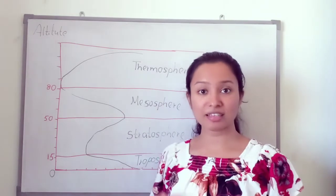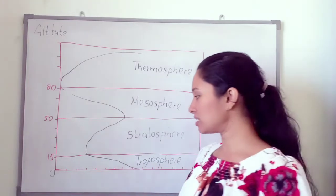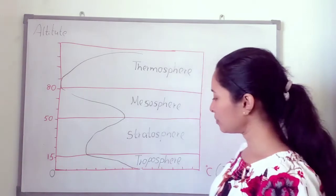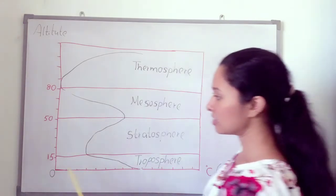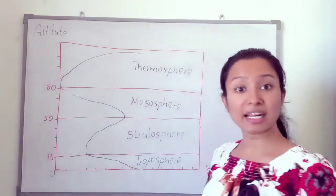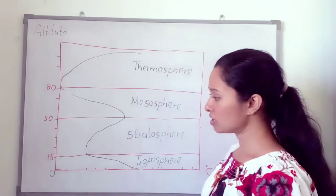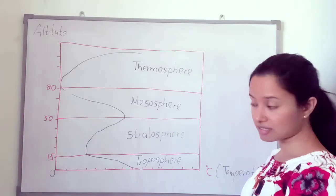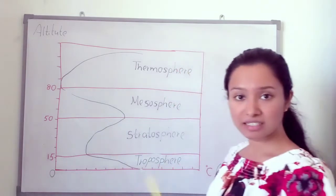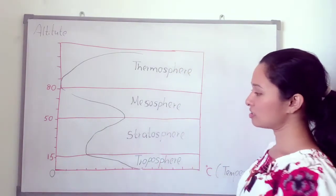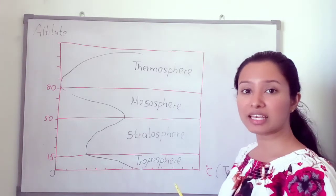Now we are going to discuss the temperature differences in the different layers of the atmosphere. Look at this figure — the x-axis refers to temperature in Celsius, and the y-axis refers to altitude, meaning the height from sea level. Left to right, temperature increases, and going up the y-axis, altitude increases. We can see how temperature differs across the layers.